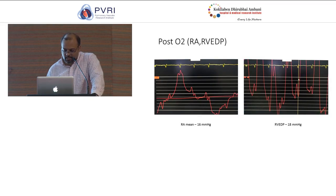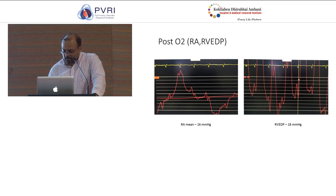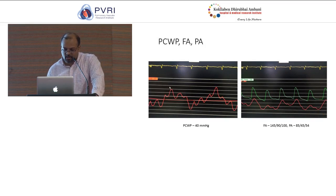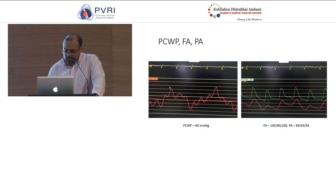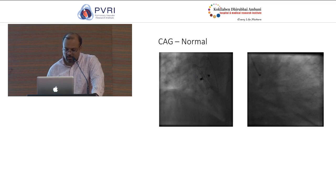After giving oxygen, RA mean pressure had actually increased to 16 and RVEDP was 18 mmHg. There was a lot of respiratory variation due to his anxiety and obesity-related problems. His pulmonary capillary wedge pressure still remained at 40 with severe pulmonary hypertension — not much difference. We were concerned about his coronary arteries. He didn't have any risk factors, but we did a coronary angiogram which showed normal coronary arteries.